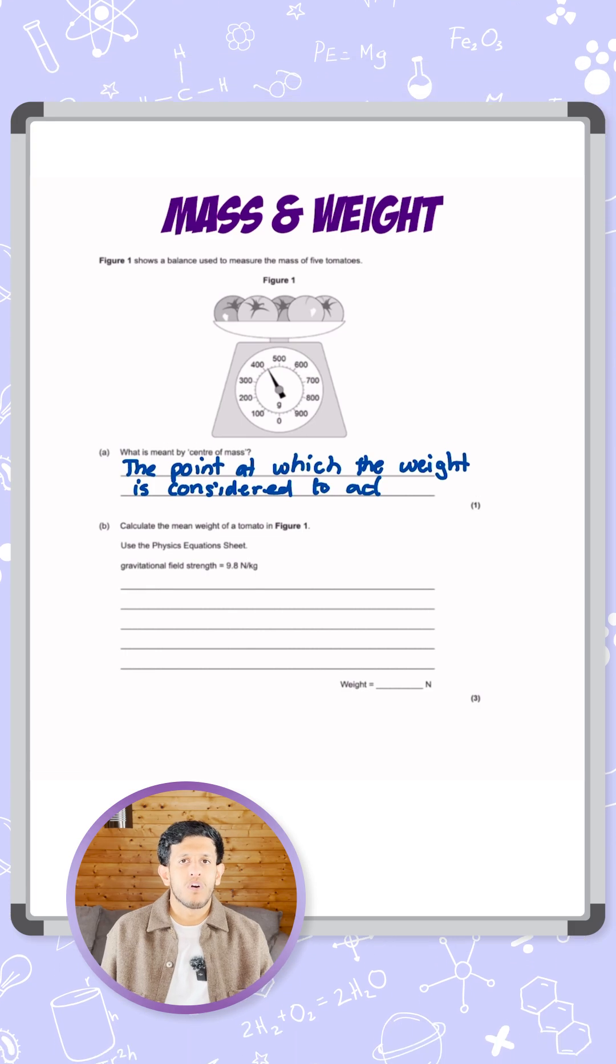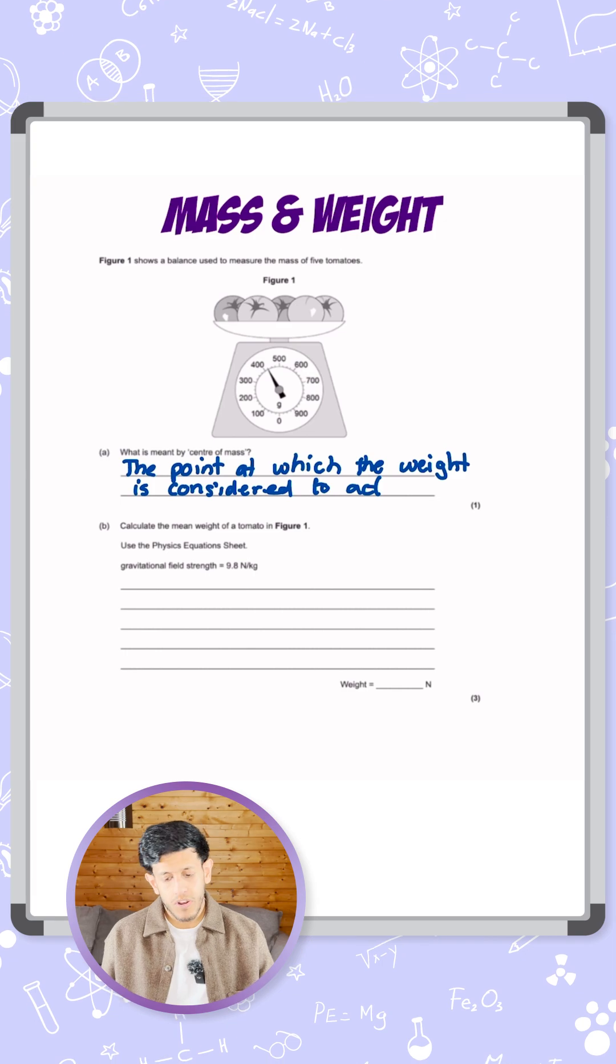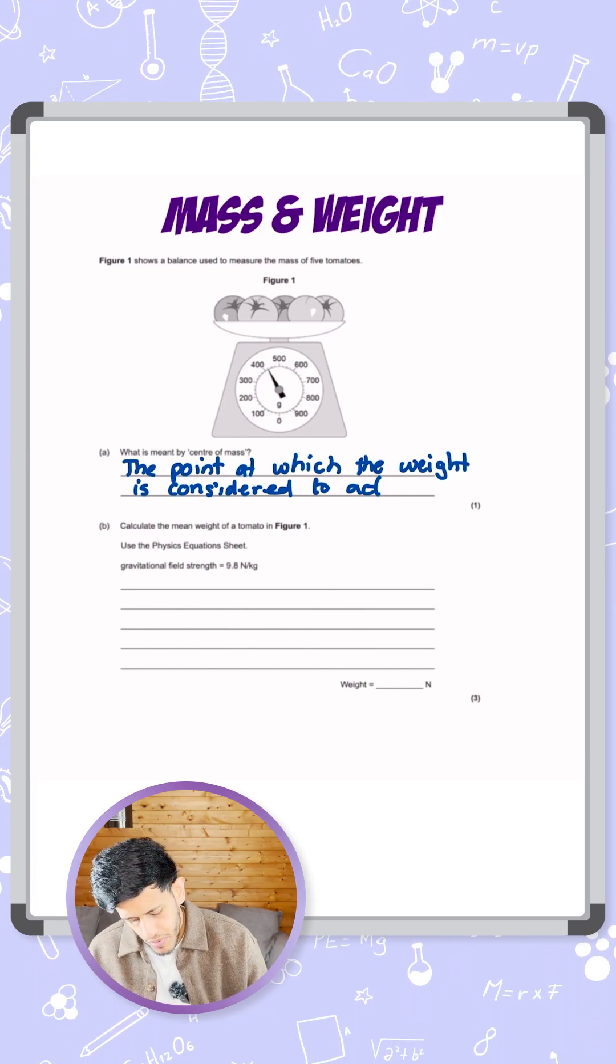Part B says calculate the weight of a tomato in figure one. Use the physics equation sheet, and we're given that gravitational field strength is 9.8 newtons per kilogram.